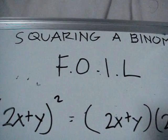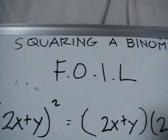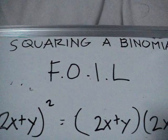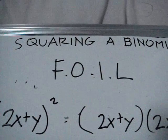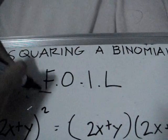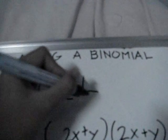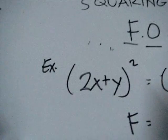There is a technique we can use in squaring binomials. It is called FOIL. FOIL means the sum of the products of the first terms, outer terms, inner terms, and last terms.